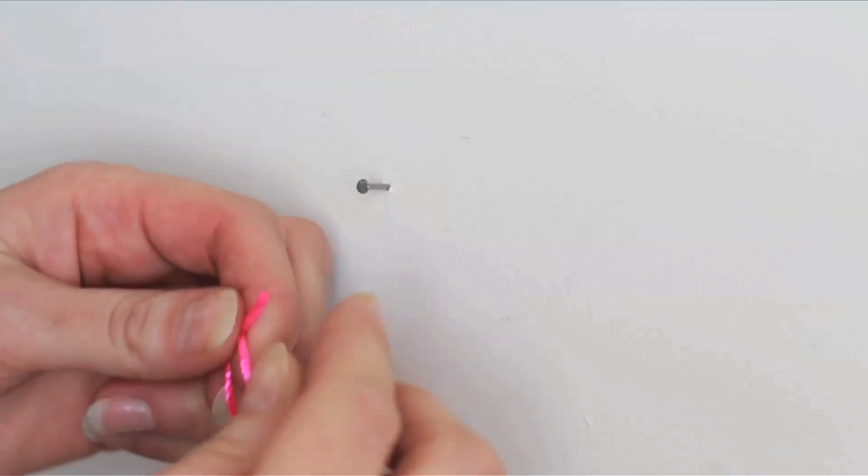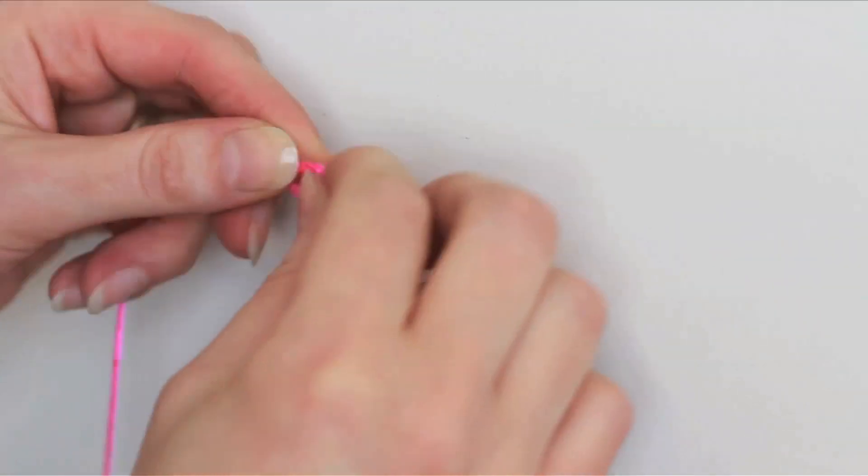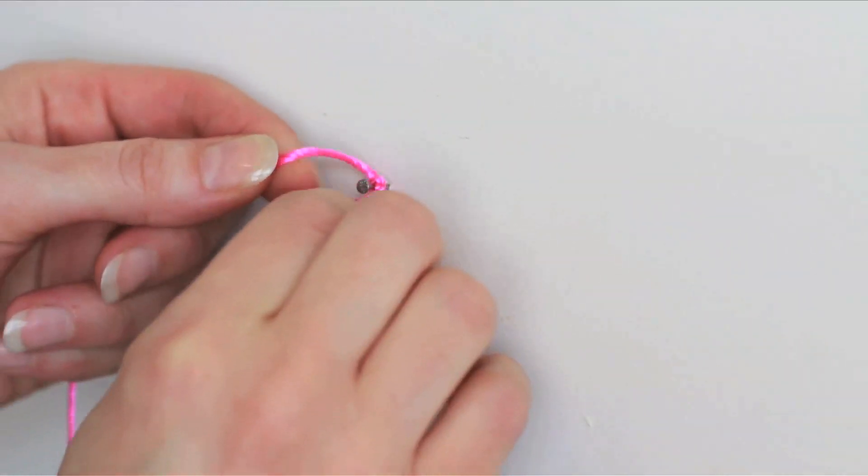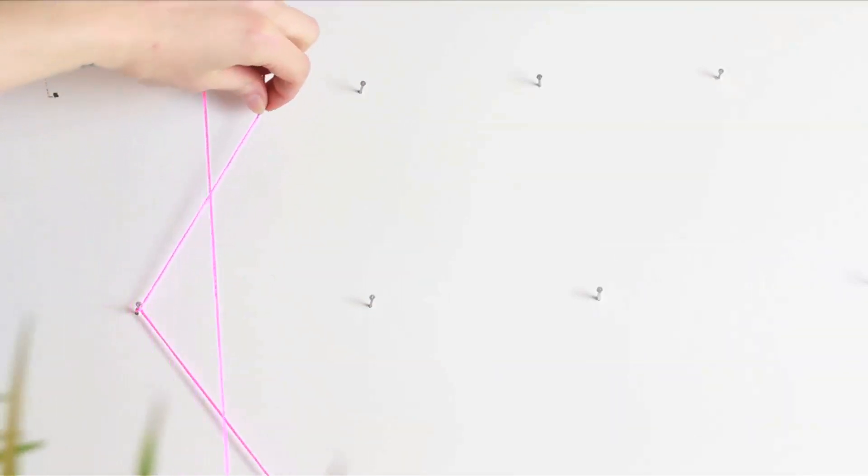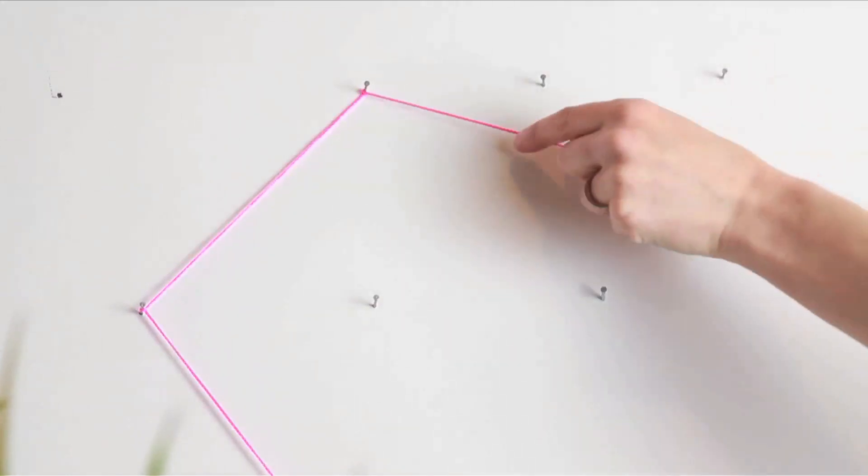Starting from the bottom point, take the end of your twine and tie it around that nail. Double and triple knot that puppy until it's secure. Pull the twine up to the next nail on the wall, keeping it taut, and wrap it around that nail. Continue pulling the twine to each nail around the perimeter of the diamond, pulling it taut and wrapping it around each one.